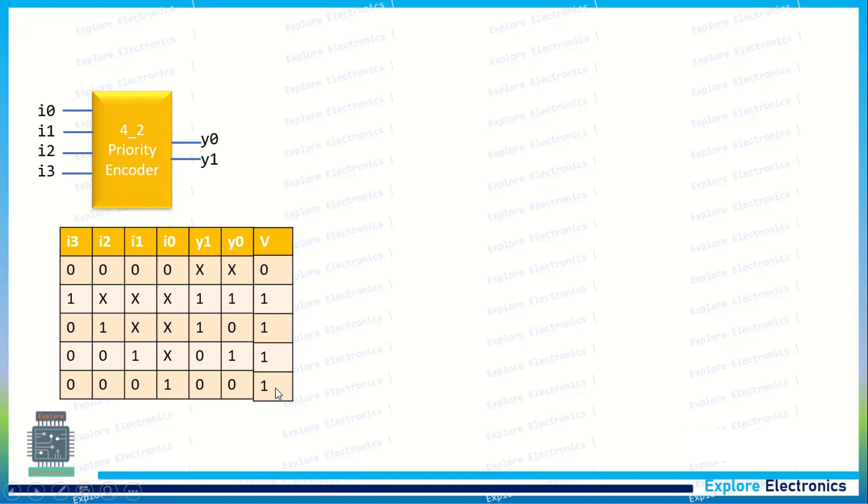And when i0 is equal to 1 and other highest priorities are 0, then it will be encoded to 0, 0. This is also valid. This is how the priority scheme will be executed. And for these, if you write the expression, V will be 1, 1, 1, 1.